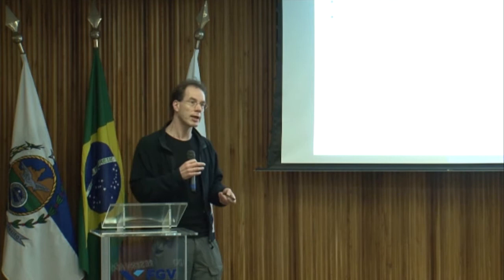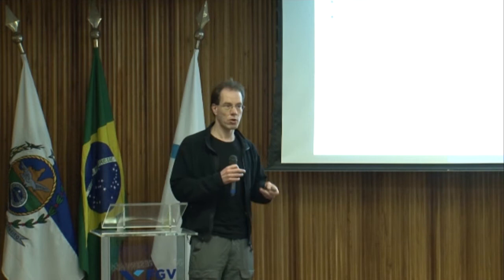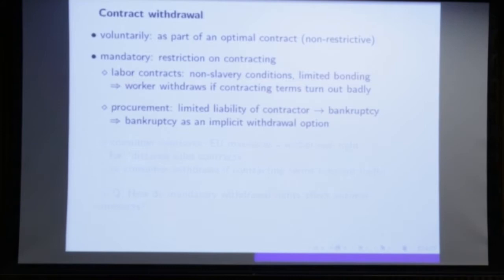The worker has a right of withdrawal if the employment relationship turned out badly. In academia, if you look for a different job and you already have tenure, you often take a leave of absence to find out whether the new job is good — you can always come back and withdraw from the new job. Another example is procurement contracts.